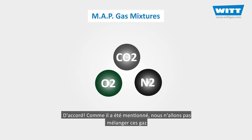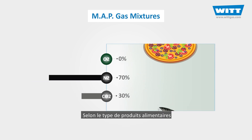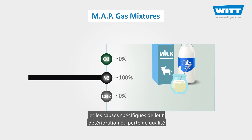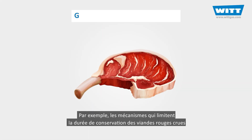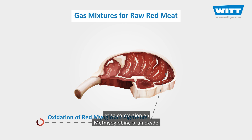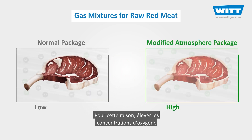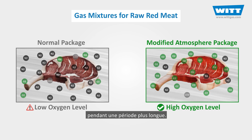We're not going to mix these gases in the same way for all kinds of foods. Depending on the type of food products and the specific causes of their spoilage or quality deterioration, the gas mixture would be different. For example, mechanisms that limit the shelf life of raw red meats are microbial growth and oxidation of the red myoglobin pigment, converting it to oxidized brown metmyoglobin. For this reason, high concentrations of oxygen are necessary in order to maintain the desirable red colour for a longer period of time.